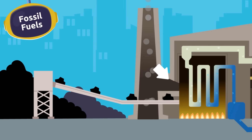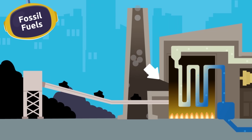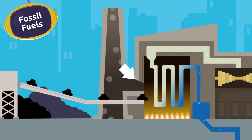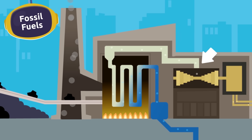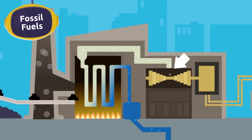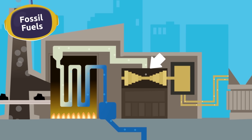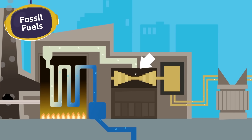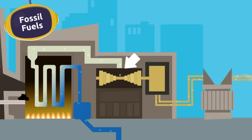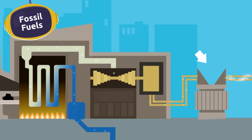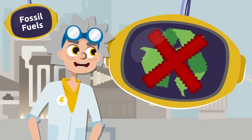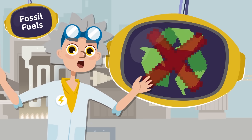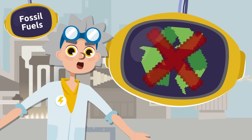We burn these fossil fuels at power plants to boil large amounts of water. This produces steam that is powerful enough to turn a large turbine, which basically looks like a big egg beater. When the turbines turn, they activate a generator that produces electricity. But we have to be careful, because producing electricity with fossil fuels is harmful to the environment.